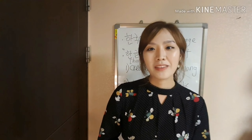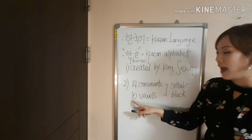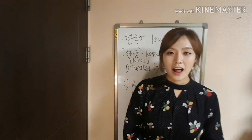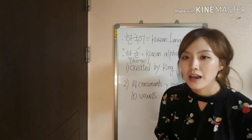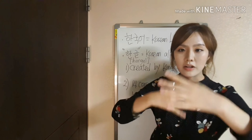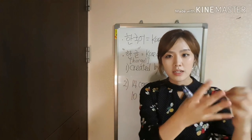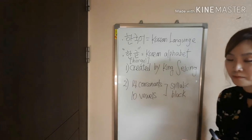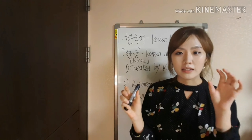Let's go on to the second truth. There are 14 consonants and 10 vowels in 한글. With just those, we can combine them. There is a combination between the vowels and the consonants, and they make one syllable block. It's very different from English.